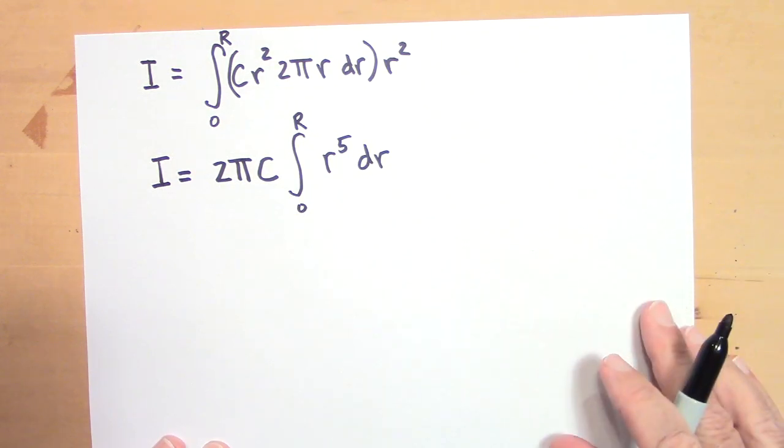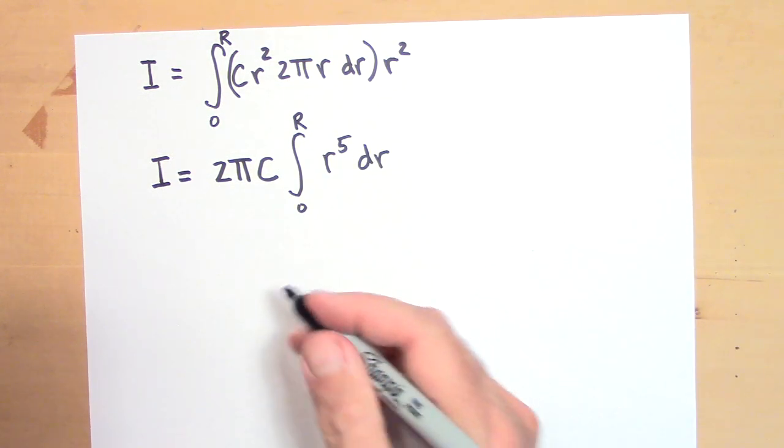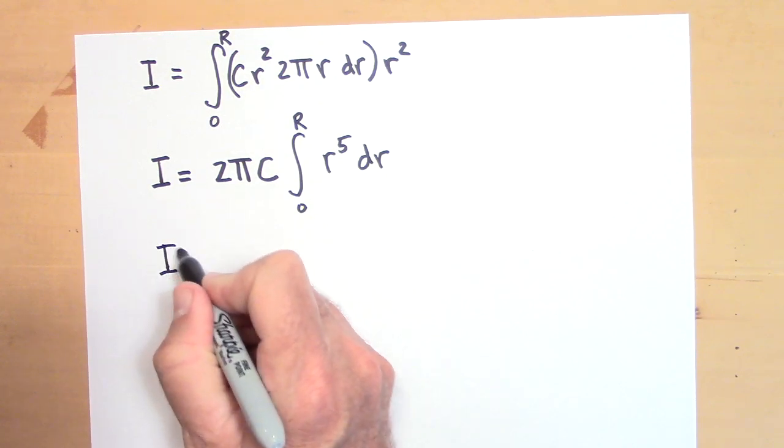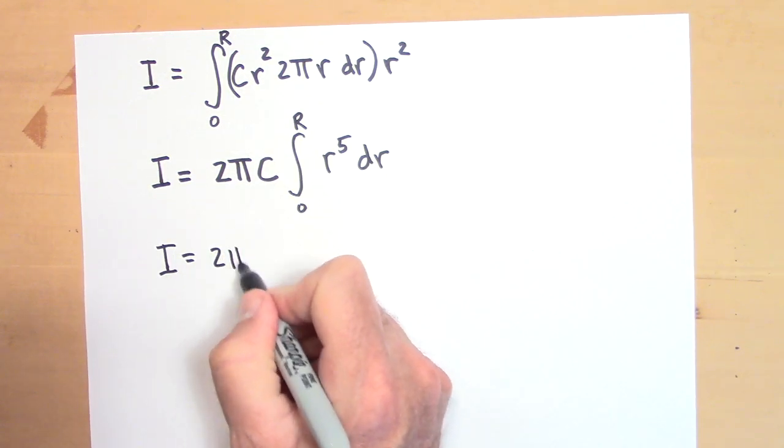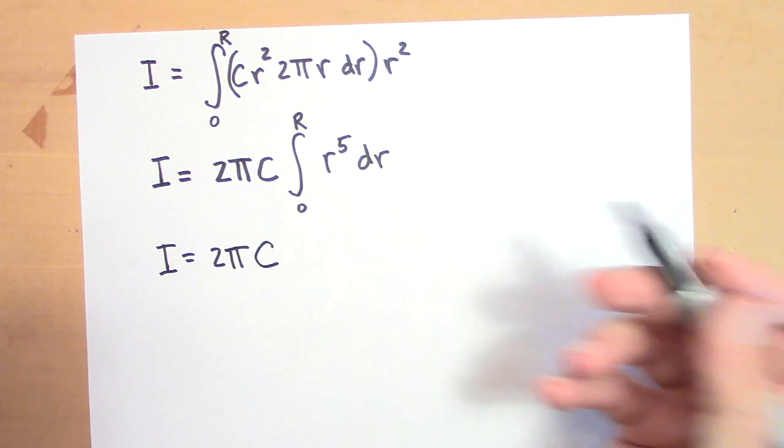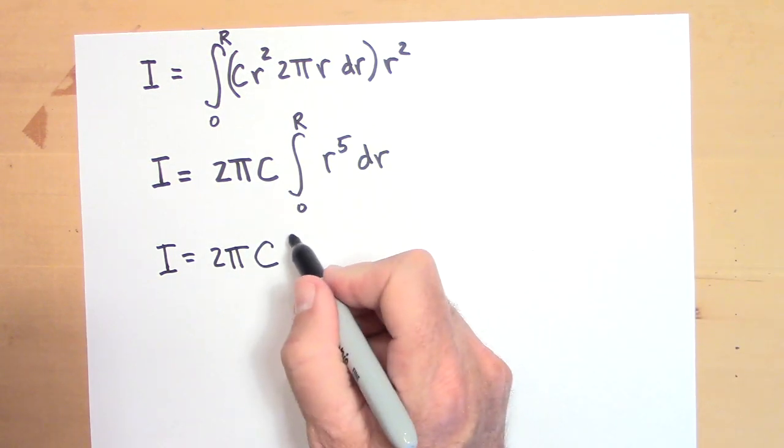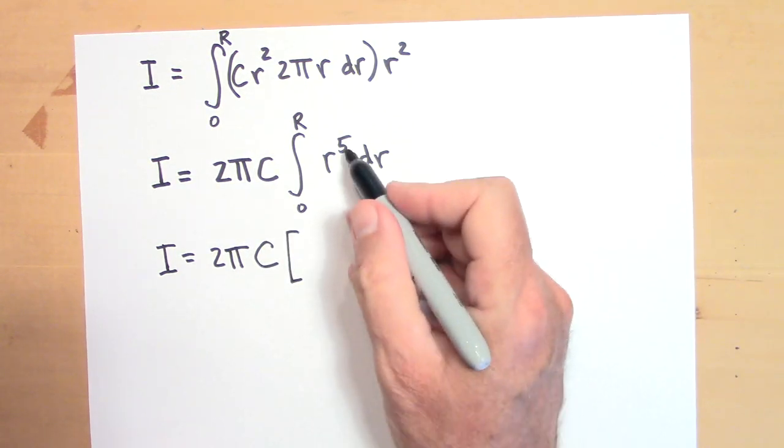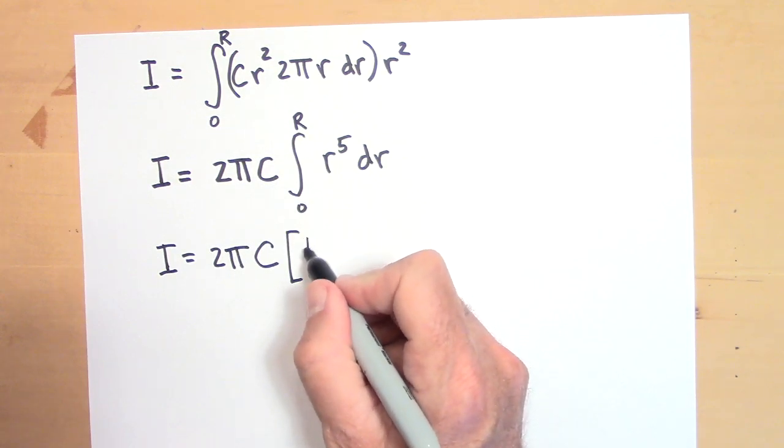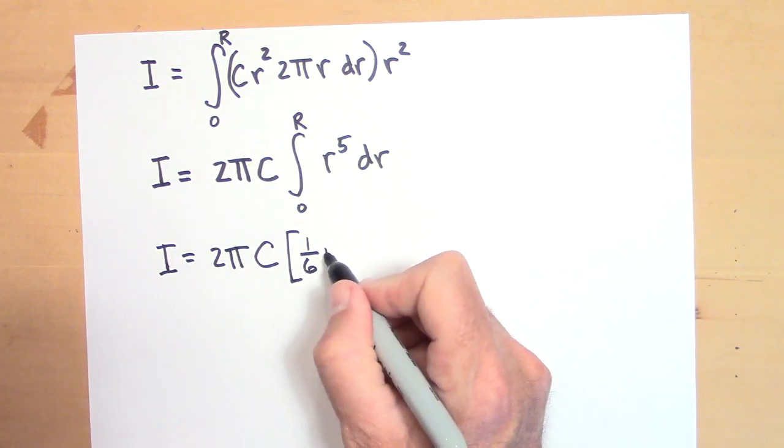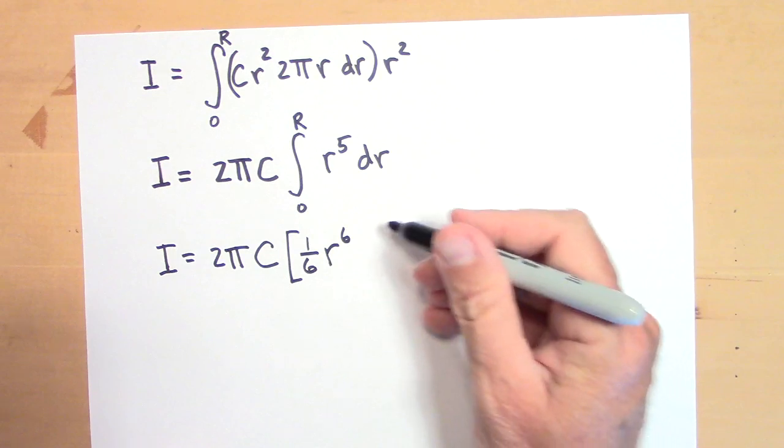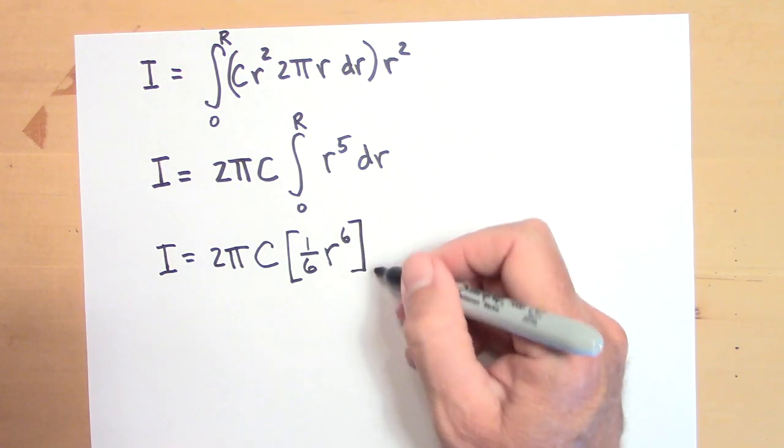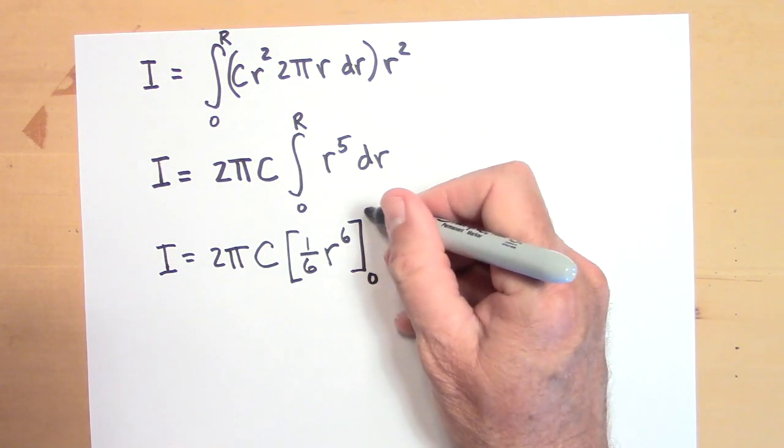All right. Let's take the integral now. So I is going to be equal to two pi C, C just a constant, remember? And so this is going to be r to the fifth. So that's going to be one sixth r to the sixth. And then I'm going to put the limits of integration going to be from zero to capital R.